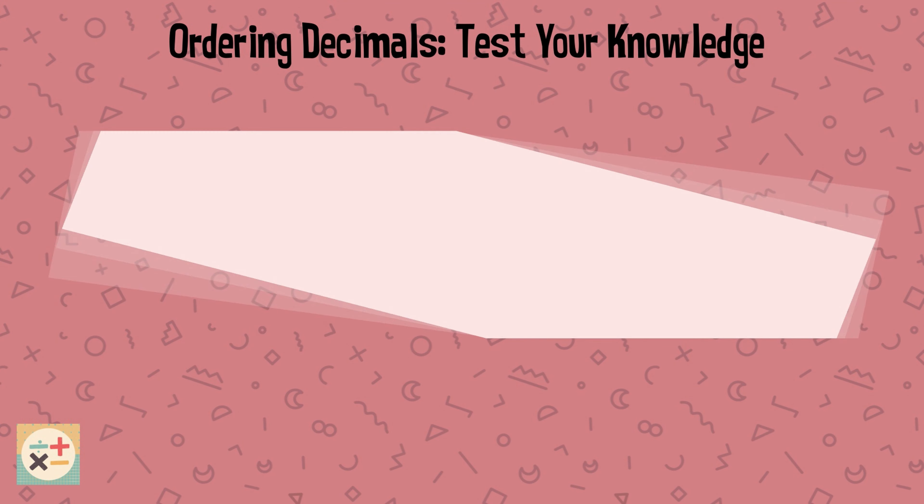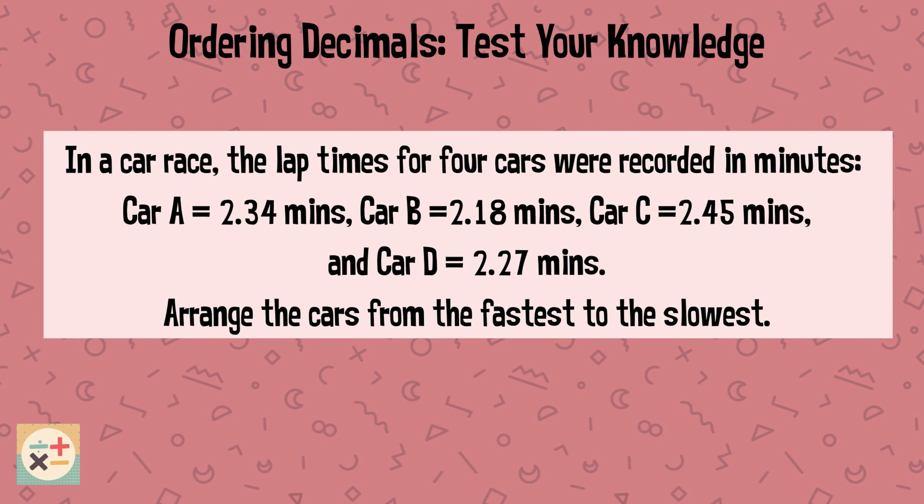Question 4. In a car race, the lap times for four cars were recorded in minutes. Car A was 2.34 minutes, car B 2.18 minutes, car C 2.45 minutes, and car D was 2.27 minutes. Arrange the cars from the fastest to the slowest.